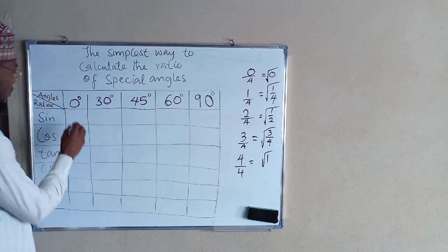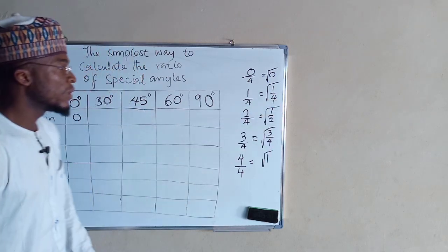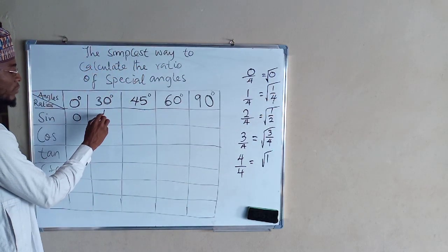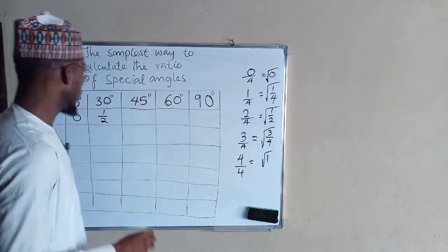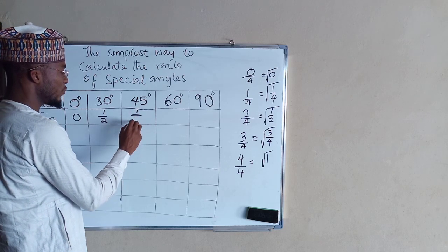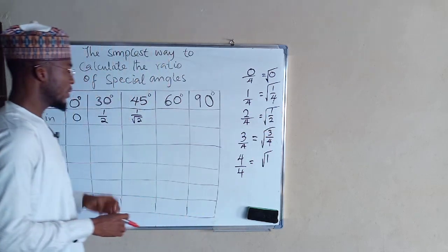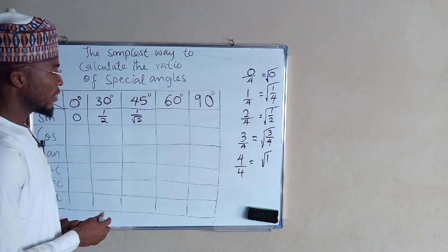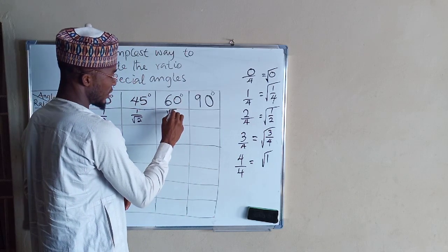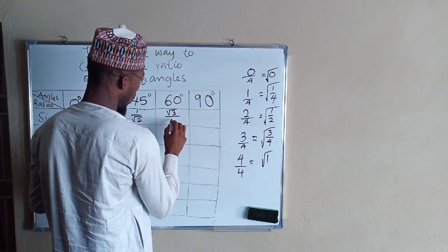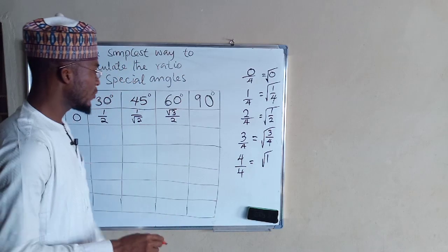So the square root of 0 is 0. The square root of 1 over 4 is 1 over 2. The square root of 1 over 2 is 1 divided by root 2, because the square root of 1 is 1 while the square root of 2 remains root 2. Then the square root of 3 over 4 is root 3 divided by 2. The square root of 4 over 4 gives us 1. These are your sine values.